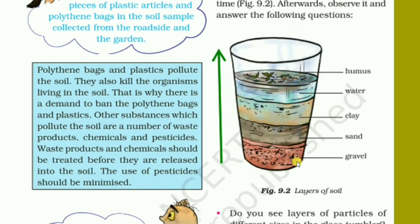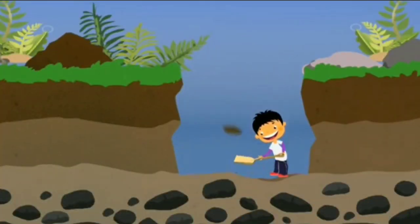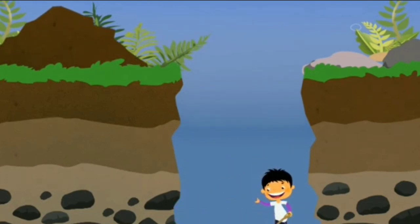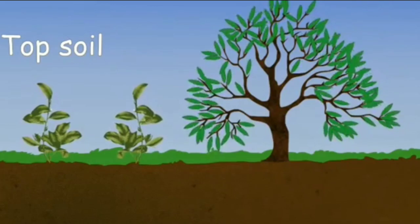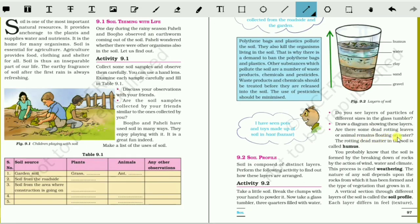These layers are actually known as the soil profile. Now from the questions: Do you see layers of particles of different sizes in the glass tumbler? Of course, yes. Draw a diagram showing these layers. Are there some dead rotting leaves or animal remains floating on the water? Of course, you can see some dead ants or some animals, some plants will be floating on the surface.